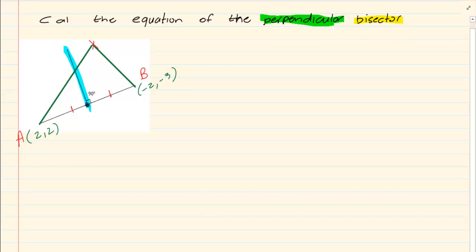Number one, we know that this is going to be the midpoint. So to get that coordinate, we are going to work out the midpoint of AB which is x1 plus x2 all over 2 and y1 plus y2 all over 2.